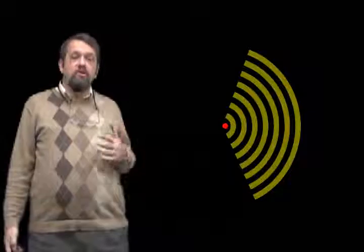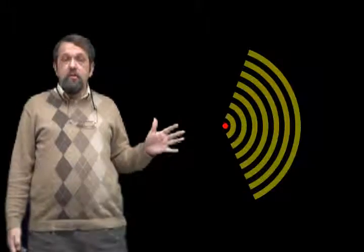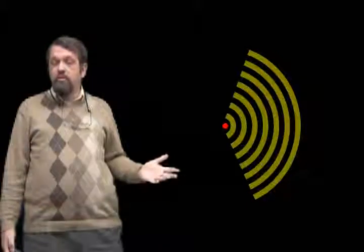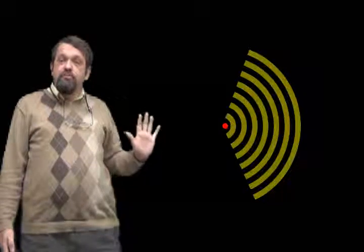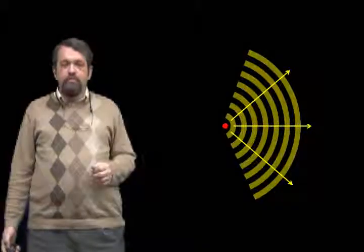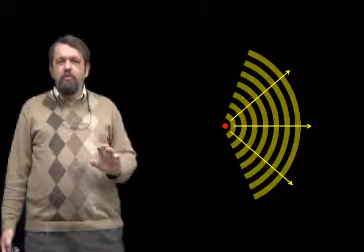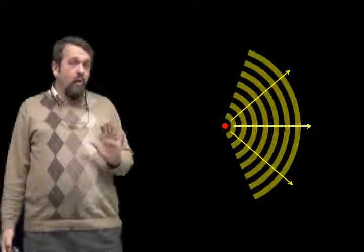Suppose we have a source of waves broadcasting out into space. Here I've drawn a bunch of wave fronts. These wave fronts correspond to the locations of the wave maxima — the crests of the wave — places of maximum electric field, maximum pressure, or maximum displacement. At a certain moment in time, it's a snapshot of the wave propagating out in all directions from the source.